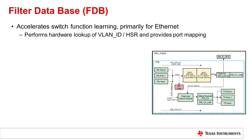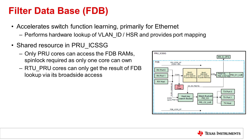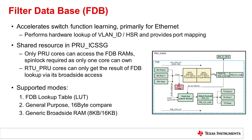The Filter Database, or FDB, helps accelerate switch function learning for Ethernet applications and performs hardware lookups of VLAN ID and HSR, and provides port mapping. This accelerator is a shared resource in PRU ICSSG; however, accessibility differs between the different PRU ICSSG cores. For example, the PRU cores are the only cores that can access the FDB RAMs and require a spin lock to indicate which core owns the access at a given time, while the RTU cores can only read the FDB lookup results. The FDB supports three modes: FDB lookup table, general purpose 16-byte compare, and generic broadside RAM. The FDB contains two memory banks — bank 0 and bank 1 — which can independently be configured as a lookup table or general purpose memory.